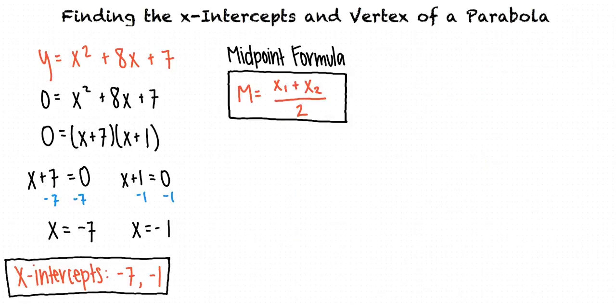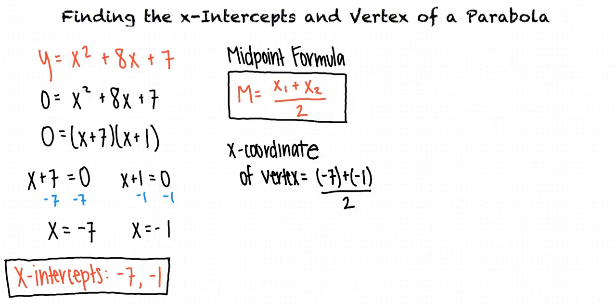To find the x-coordinate of our vertex, which will be the midpoint, we will substitute negative 7 in for x1 and negative 1 in for x2. This leaves us with negative 7 plus negative 1 divided by 2.